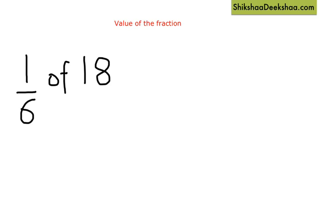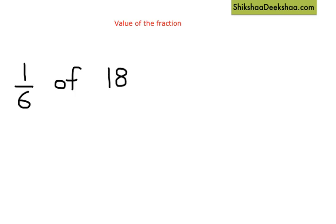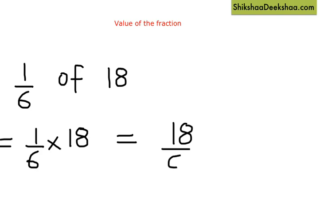Let's find out. 1/6 of 18 is equal to 1/6 multiplied by 18. So 1/6 of 18 equals 1/6 multiplied by 18, which is equal to 18/6, which actually means 18 divided by 6. So the answer is 3.